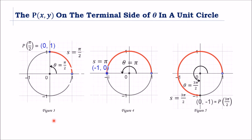Figure 3 has an arc length of π/2 and terminates at the positive y-axis. So P of π/2 is (0, 1). Figure 5 has arc length 3π/2, which terminates at the negative y-axis. With this, P of 3π/2 is (0, −1).